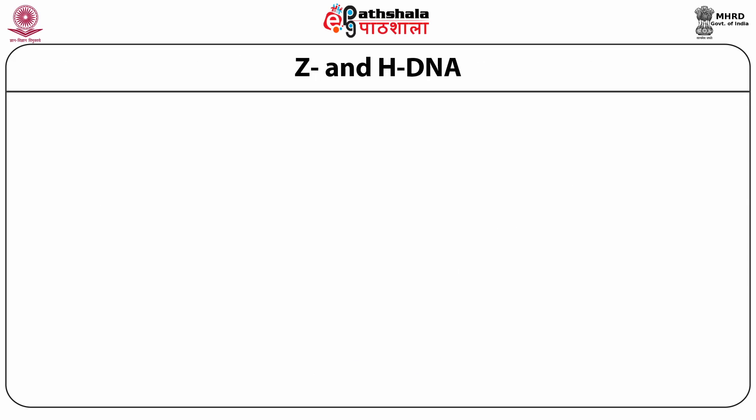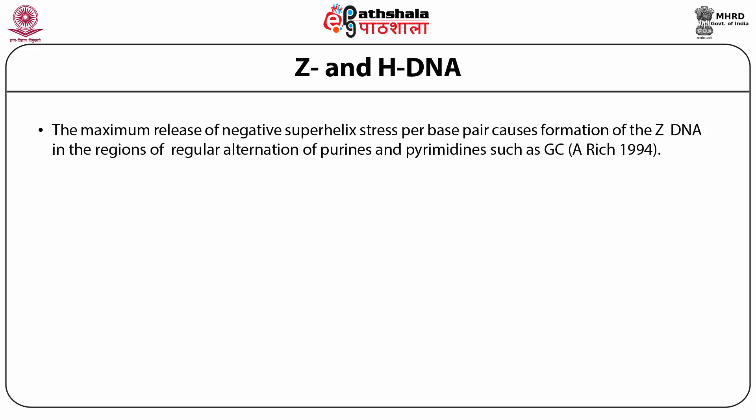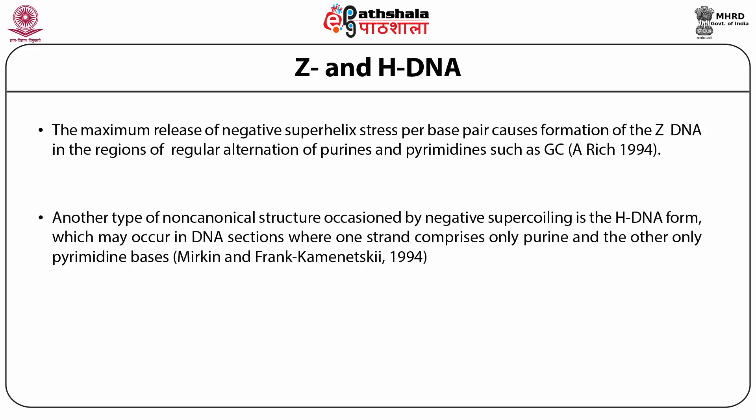G and H forms of DNA: the maximum release of negative superhelix stress per base pair causes formation of Z-DNA in regions of regular alternation of purines and pyrimidines such as G-C. This was observed by Nobel laureate Alexander Rich in 1994. Another type of non-canonical structure caused by negative supercoiling is the H-DNA form, which may occur in DNA sections where one strand comprises only purines and the other only pyrimidines.